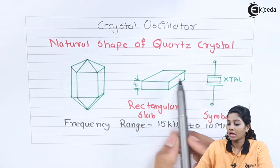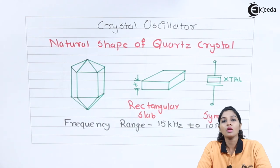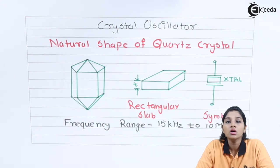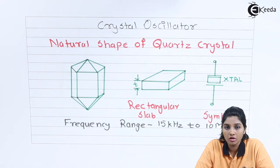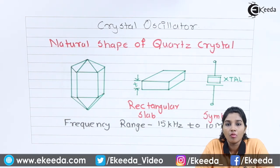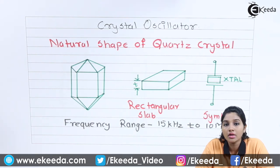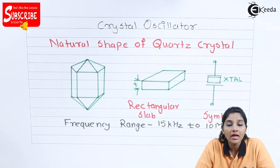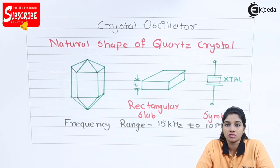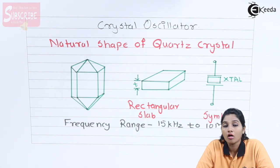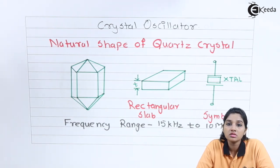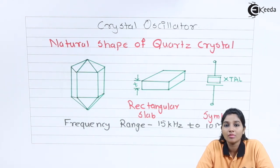After cutting, the rectangular slab is mounted into the electronic circuit in assembled form. The rectangular slab is connected between two metal plates and housed in a package — that entire assembly is considered as the crystal oscillator. Whatever voltage is applied across the crystal oscillator appears in the form of mechanical vibrations at the output, and the output frequency of vibration is similar to the applied AC input voltage.